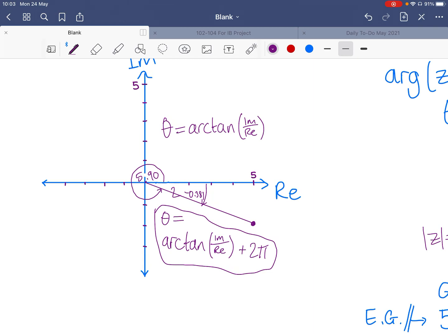Now, if you imagine you had one that was here, you would have a negative over a negative. And that would just, your calculator would just assume that it's the equivalent positive fraction and give you this angle here.